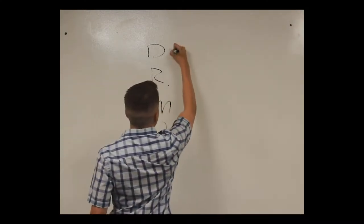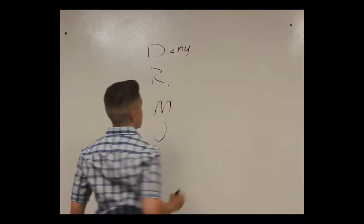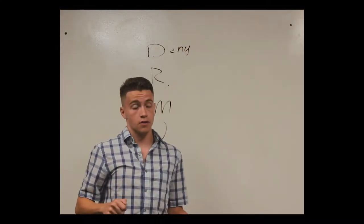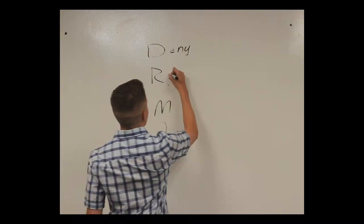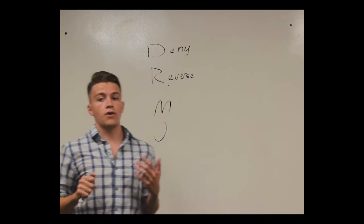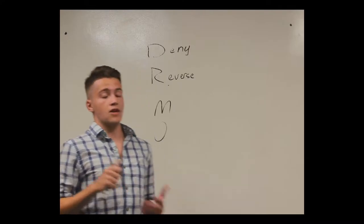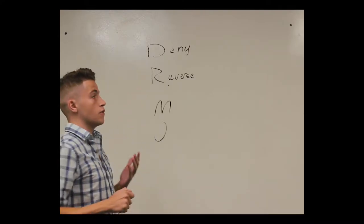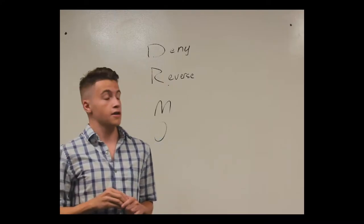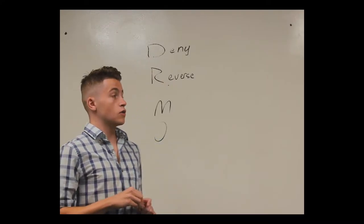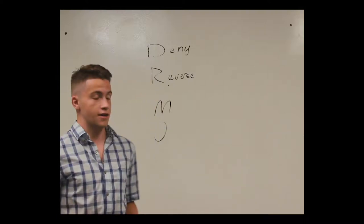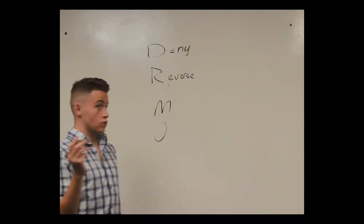The D stands for deny, which just means you're going to be saying no, this argument isn't true because. The R stands for reverse, which is you're going to be saying their argument is the opposite of what they're saying. For instance, someone could say Florida is the best state in the United States, and your reverse of that would be: actually, Florida is the worst state in the United States.